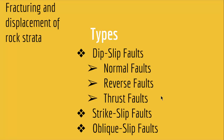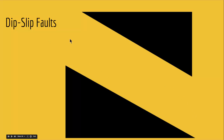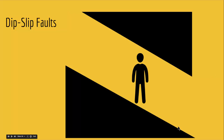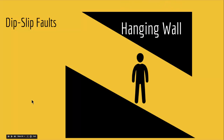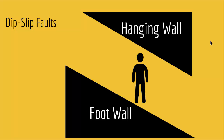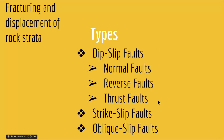Since dip slip faults have movement at an angle, the broken parts will go either up or down. Geologists call the upper part the hanging wall and the lower part the foot wall. So in a dip slip fault, the part that is over your head is called the hanging wall, and the part that is under your feet is called the foot wall. Depending on whether the hanging wall or foot wall goes up or down, we have normal faults, reverse faults, and thrust faults.